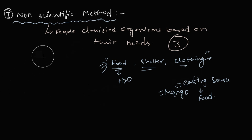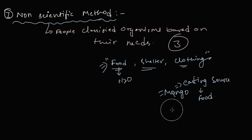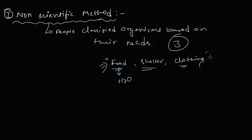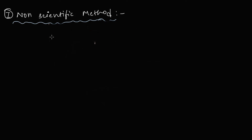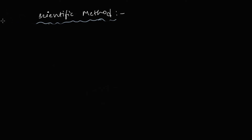People then started thinking: why should we only classify organisms based upon our basic needs? Why shouldn't we classify them based upon scientific needs? So they moved on to a scientific method of classification.